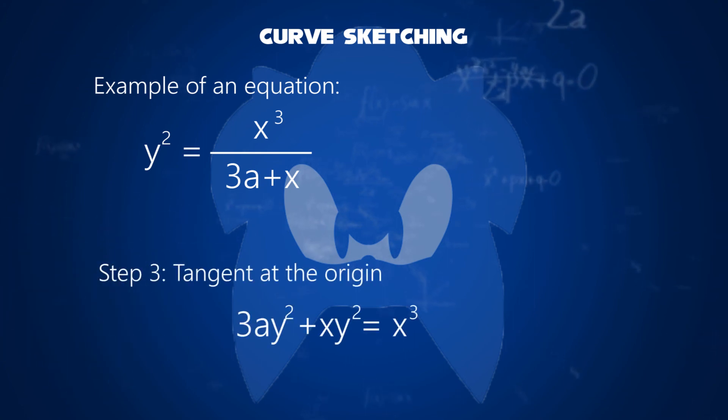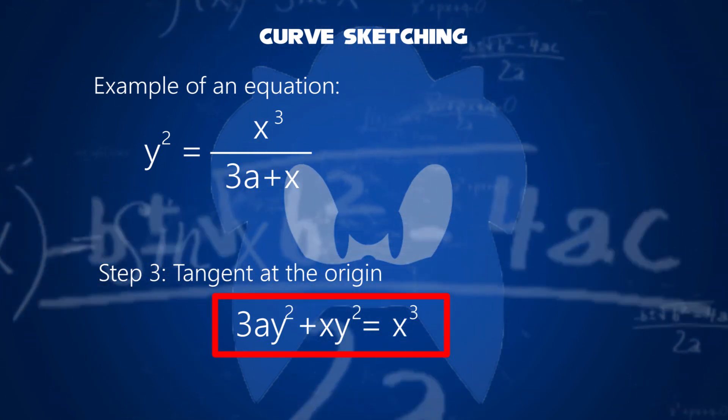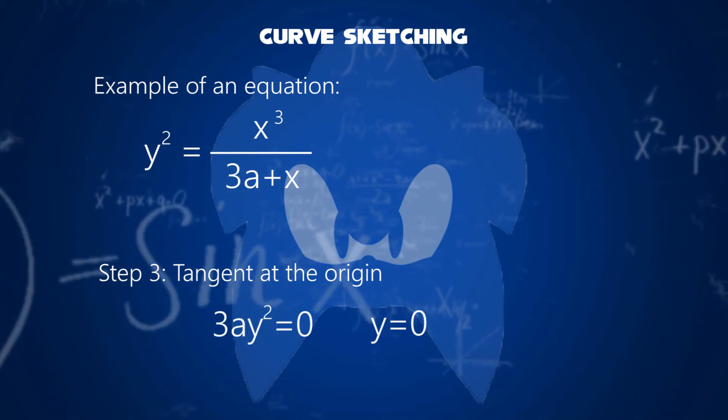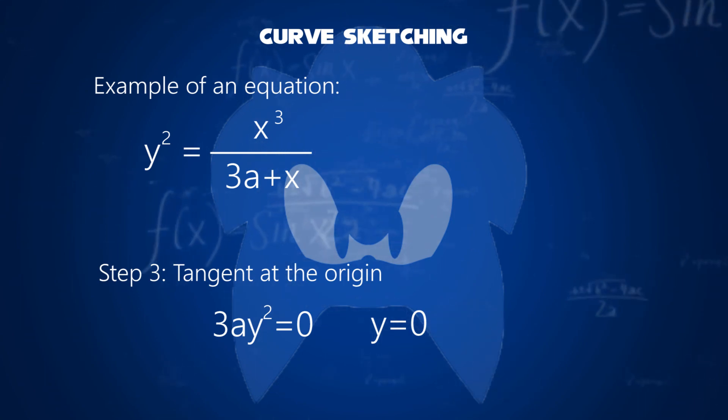Third step, to find the tangent at the origin. You have to bring the denominator to multiply it. This becomes 3a y squared plus x y squared equals x cubed. We can write 3a y squared equals zero. Taking the least degree term to zero, we get y equals zero.